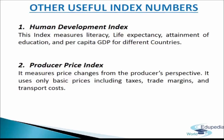Other Useful Index Numbers. The following index numbers are also widely used. Human Development Index: this index measures literacy, life expectancy, attainment of education, and per capita GDP for different countries. It measures human development to compare different countries and determine whether a country is developed or underdeveloped. It is claimed as a standard means of measuring human development, and its basic use is to rank countries by level of human development.